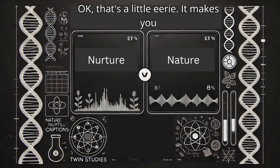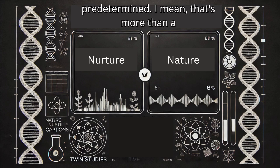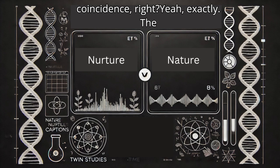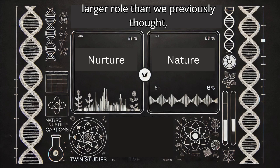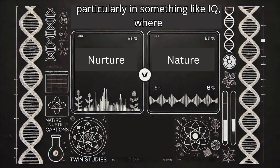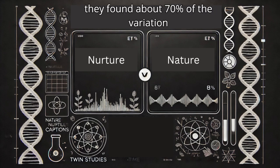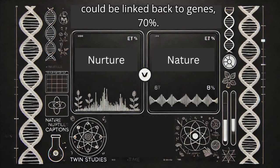That's a little eerie. It makes you wonder how much is actually predetermined. That's more than a coincidence, right? Exactly. The study suggested that genes play a much larger role than we previously thought, particularly in something like IQ, where they found about 70% of the variation could be linked back to genes.